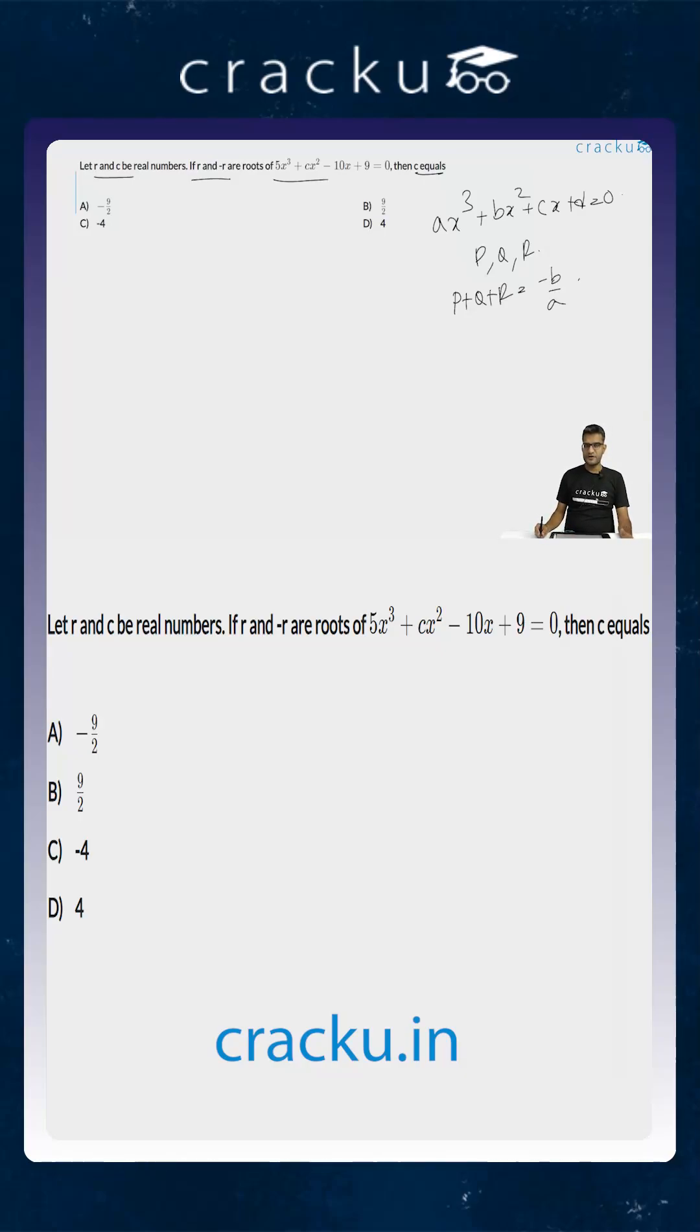The product of the roots taken two at a time, PQ + QR + PR, equals C/A. And the product of all the roots, P × Q × R, equals -D/A.